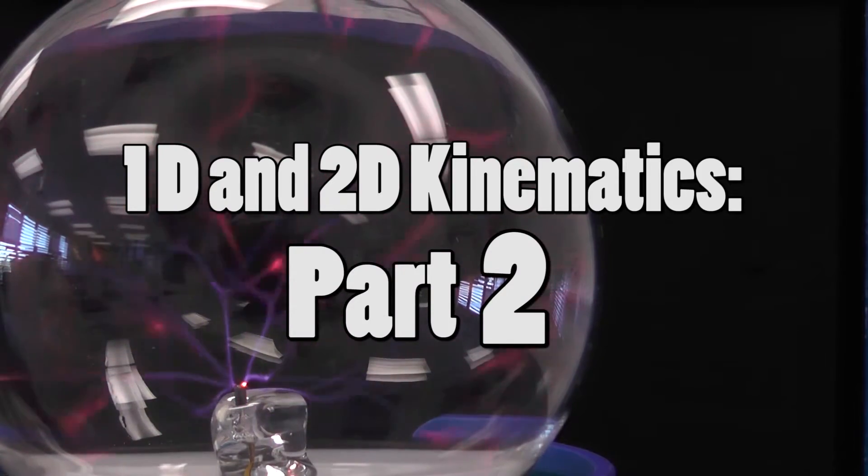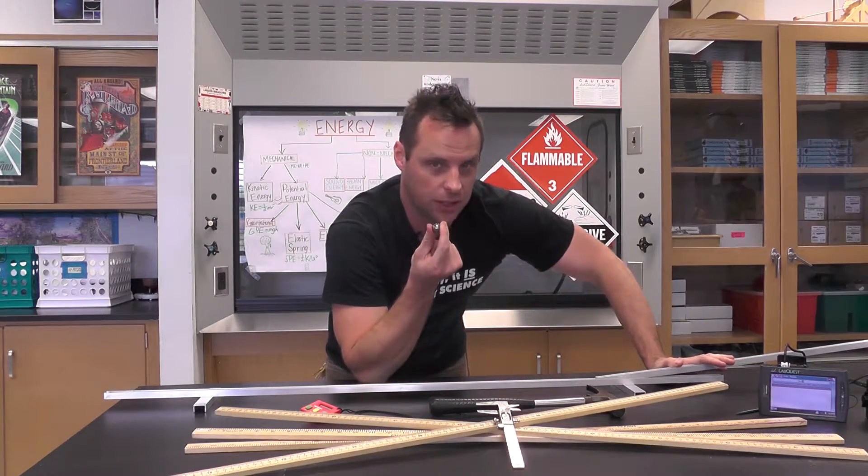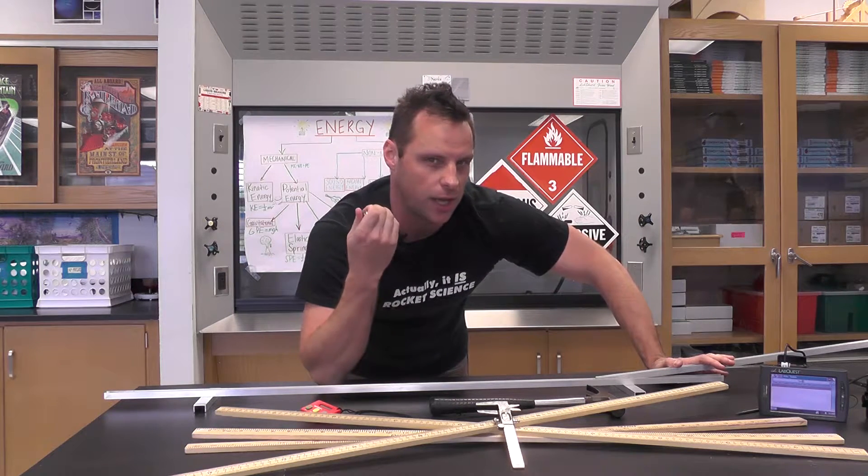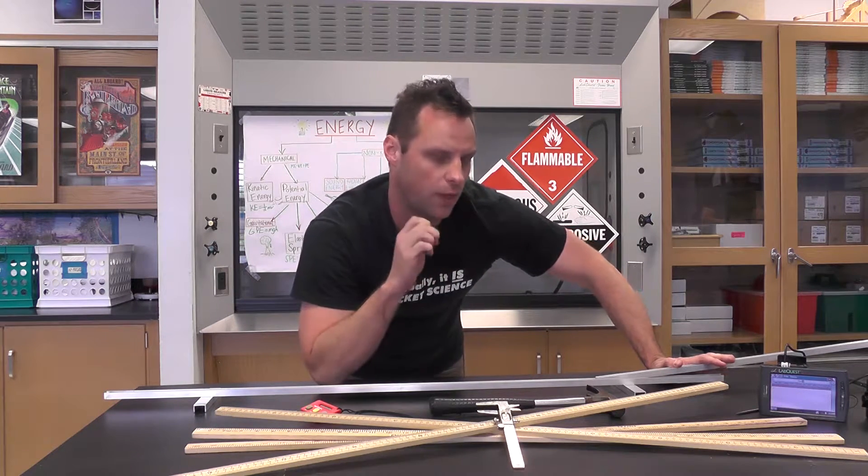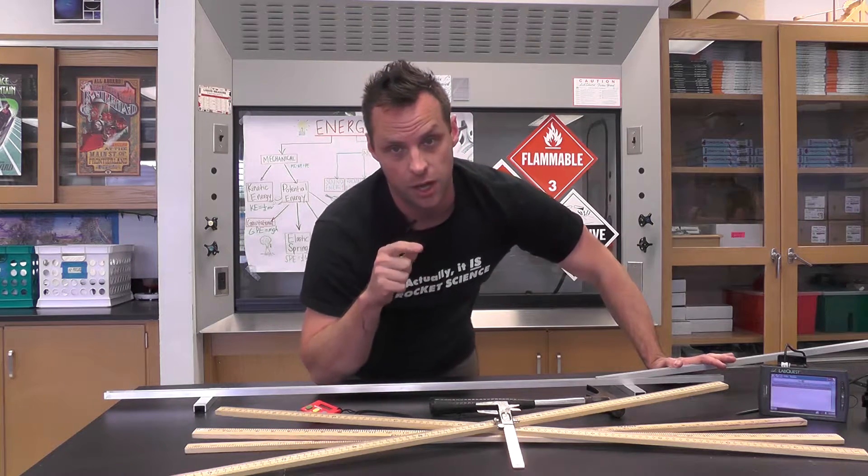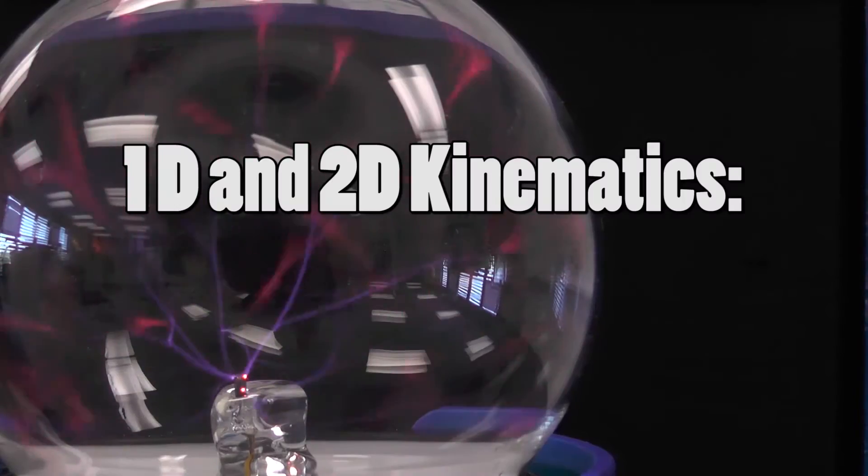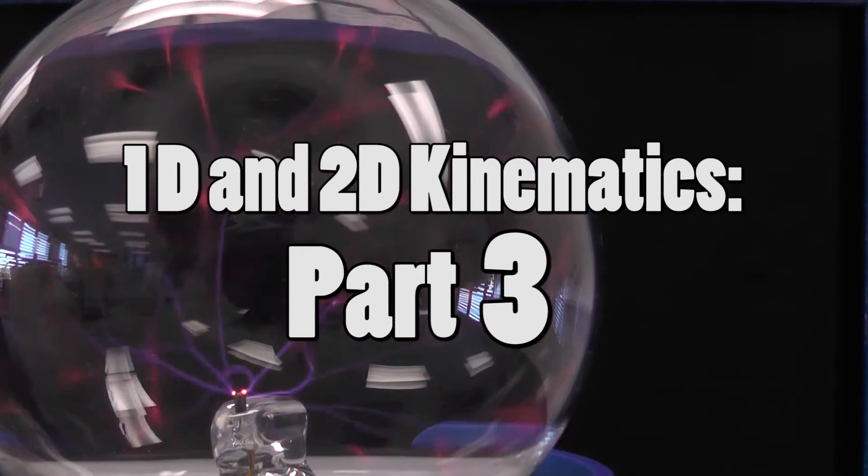Part two is concerned with the incline over here. While the steel ball is on the incline, your goal is to take measurements to try and prove whether or not the ball is experiencing constant acceleration. Once again, graphs are key here to proving or justifying your claim.